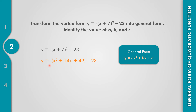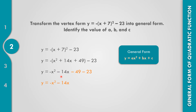Next, distribute the negative sign to the parentheses: that gives negative x squared, negative times positive 14x gives negative 14x, and negative times positive 49 gives negative 49. Bring down negative 23, then combine negative 49 and negative 23, which equals negative 72. So the general form is y equals negative x squared minus 14x minus 72.